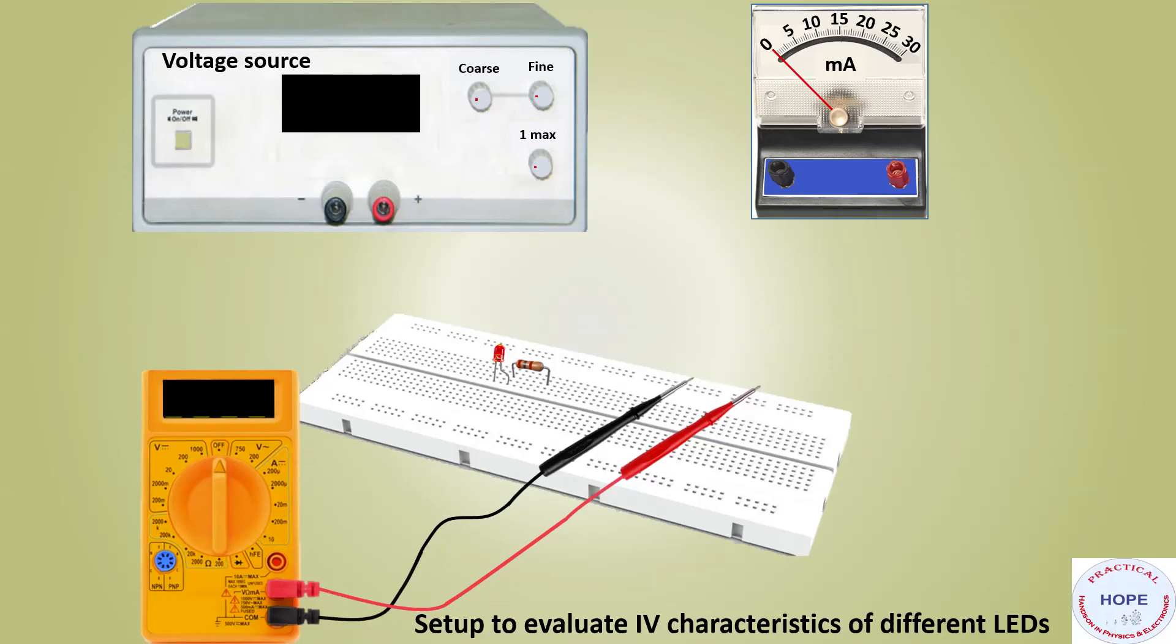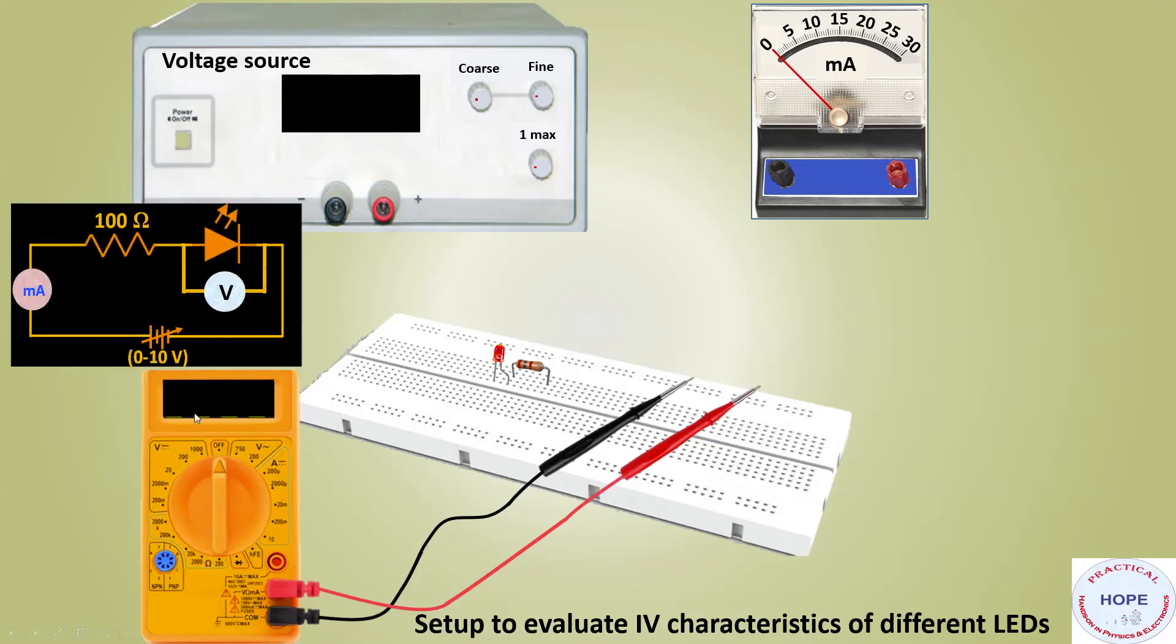So this is a circuit. Here we have a power supply, milliammeter, a resistance of 100 ohm, and LED all in series. To measure the voltage across the LED, we have to connect a voltmeter or multimeter parallel to the LED. So let's start the experiment.